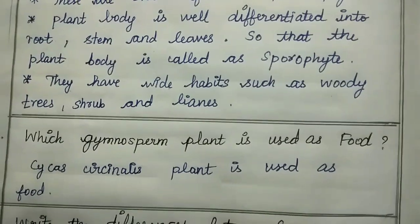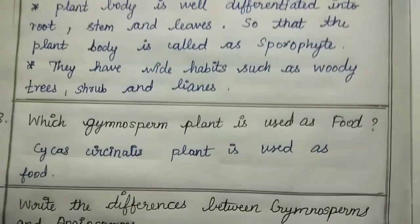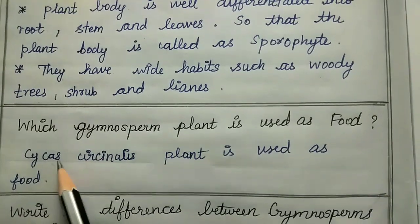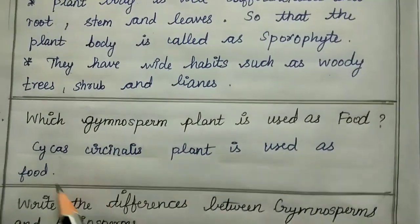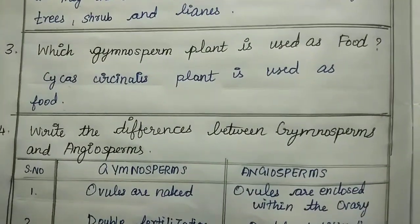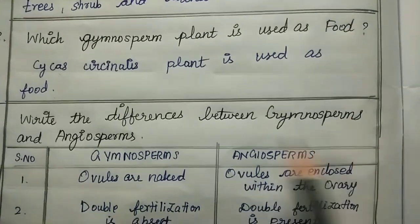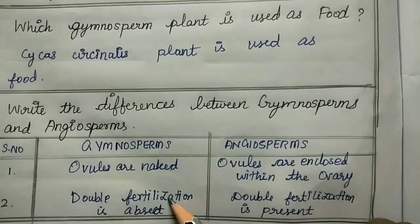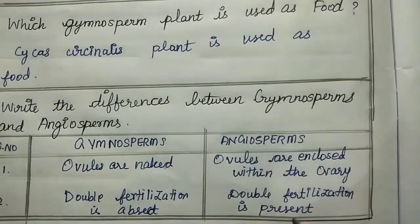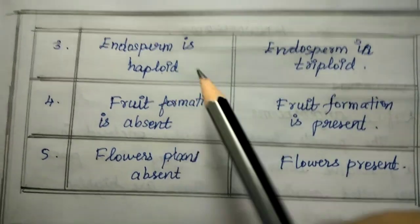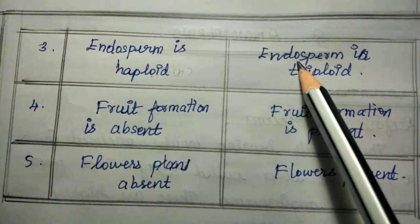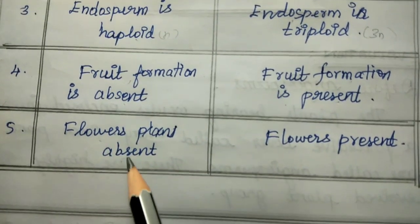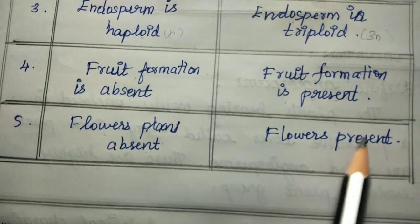Third question: which gymnosperm plant is used as food? Fourth question: write the difference between gymnosperms and angiosperms. In gymnosperms ovules are naked, but in angiosperms ovules are enclosed within ovaries. Double fertilization is absent in gymnosperms but present in angiosperms. Endosperm is haploid in gymnosperms and triploid (3n) in angiosperms. Fruit formation and flowers are absent in gymnosperms but present in angiosperms.